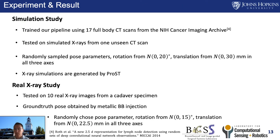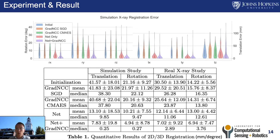To further demonstrate our method, we performed both simulation and real X-ray studies. We trained our pipeline using 17 full-body CT scans from the NIH Cancer Imaging Archive, and tested on simulated X-rays from held-out CT scans. We initialized with a large rotation and translation offset, with X-ray simulations generated by our PROST. We also tested on real X-ray images acquired from a cadaver specimen, whose ground truth pose was acquired by injecting metallic BBs and performing landmark-based registration. Results show that our proposed combination loss gives a much larger initialization range compared to the traditional CMA-ES method.